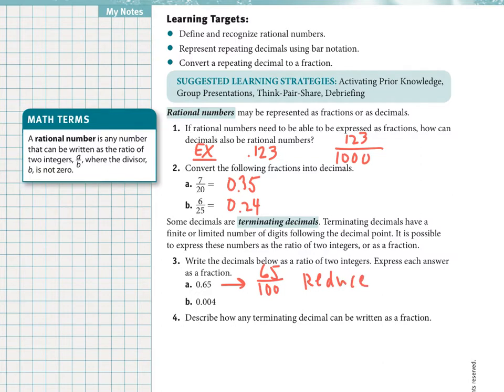Point zero, zero, zero, four. So again, the numerator of course is four. If we count the digits - tenths, hundredths, then thousandths. And that one would need to be reduced as well. And we've been doing number four - how any terminating decimal can be written as a fraction. Just do what we just did.